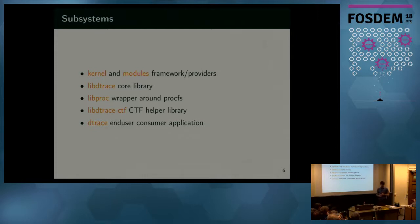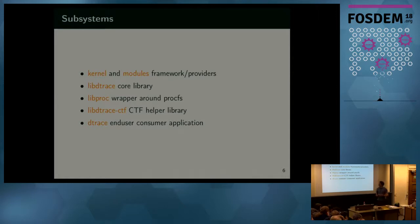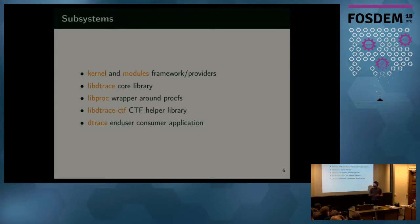We have a compact type format helper library — I will get back to this later. The last thing is the dtrace command itself, which is the consumer, but most of the logic happens in libdtrace. Thanks to this architecture, you can technically remove the dtrace command and write your own command using direct library APIs to create your own tracer or integrate D-trace into your application.